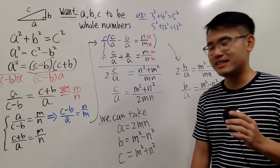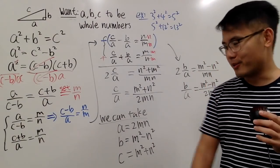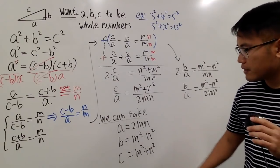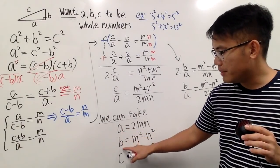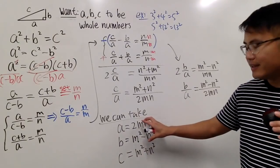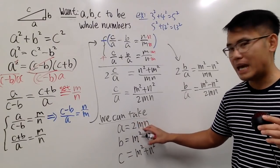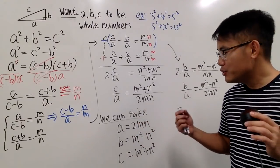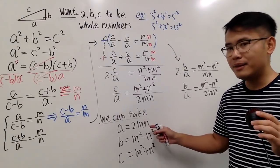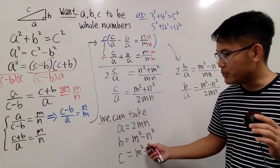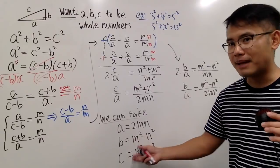How wonderful is this? Because here are two things you should know. First of all, we did isolate A, B, and C, and they are all in terms of M and N. In another word, you can just assign some values to M and N, and then these formulas will help you to generate ABC, Pythagorean triples.